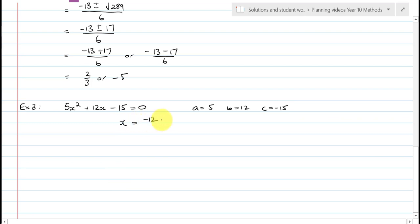And we get this, x is equal to negative b, which is negative 12, plus or minus the square root of 12 squared, minus 4 times 5, times negative 15, all over 2 times 5. Negative 12, plus or minus the square root of 144, plus 20 times 15, is 300, over 10. Negative 12, plus or minus the square root of 144, over 10.